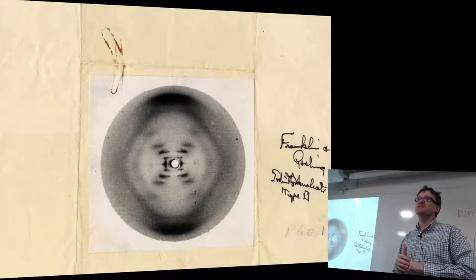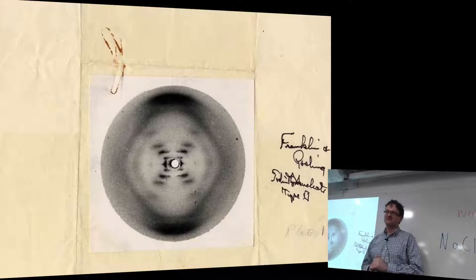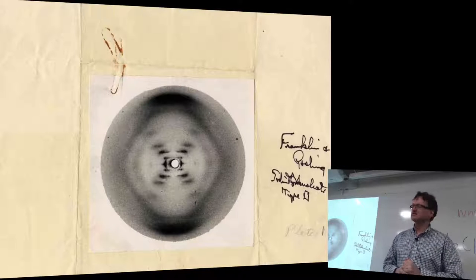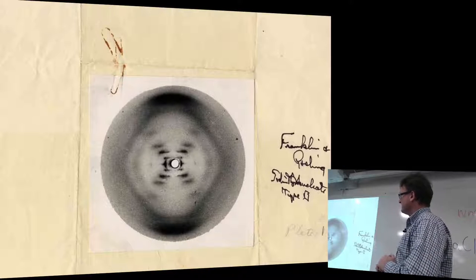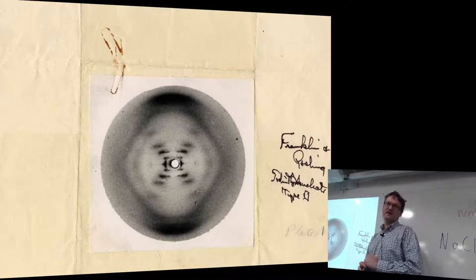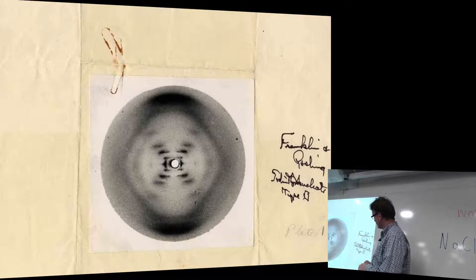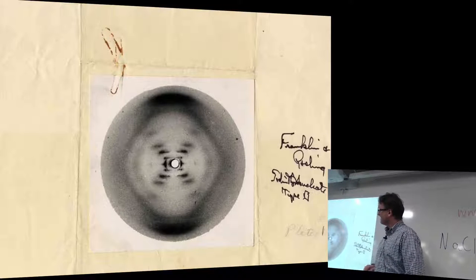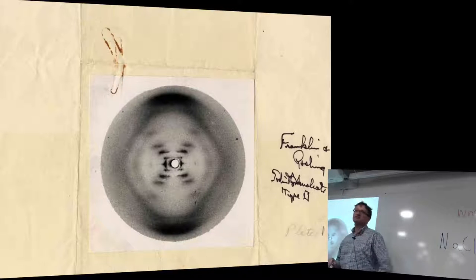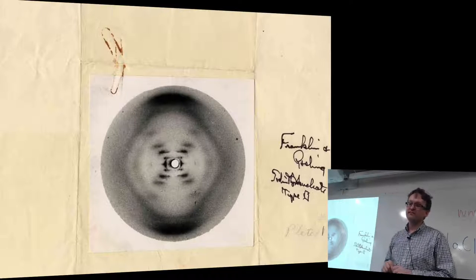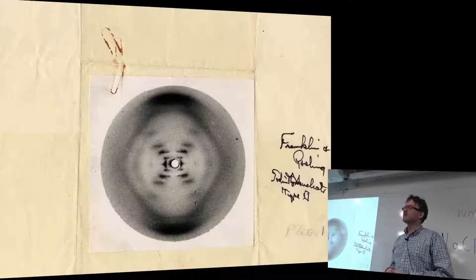This is one of Rosalind Franklin's first images — I think it is definitely the B structure of DNA, Photo 51. And this is Linus Pauling's notes about the specific crystallography symmetry groups he identified. There is a very special cross pattern here that has to do with the repeats inside the structure. Could you determine what DNA looks like based on that? You might have about 20 data points here — you can start to see the complexity of the problem.